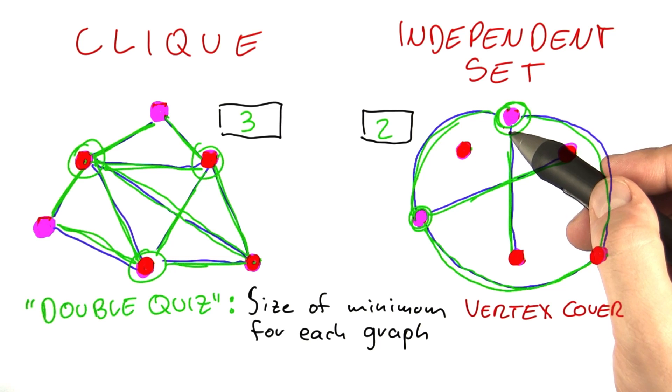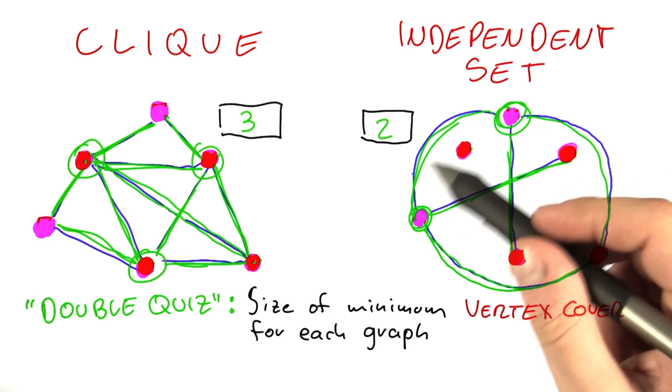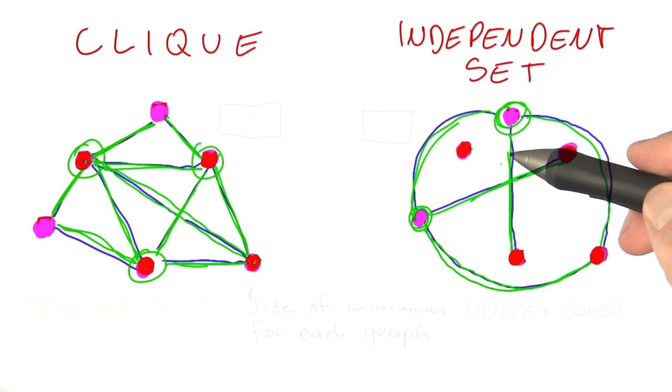Is exactly the opposite of independent sets. So if you have found the largest possible independent set, then you have found the smallest possible vertex cover. And indeed, it's actually not that difficult to see that this is always the case.